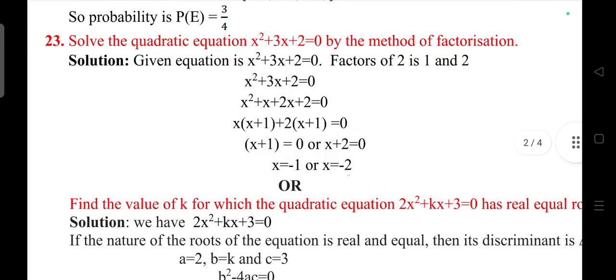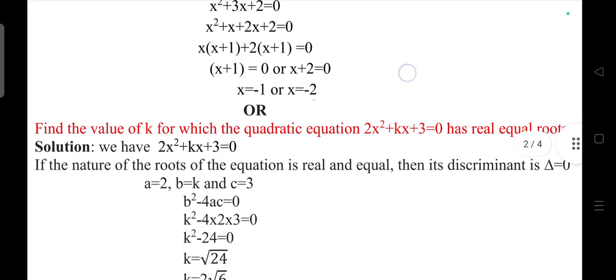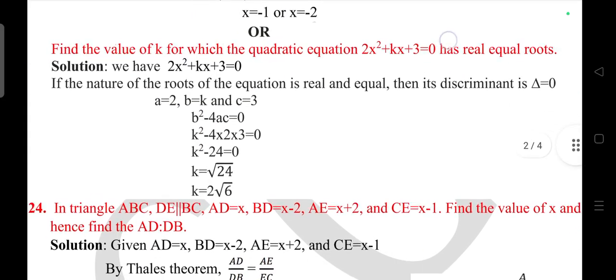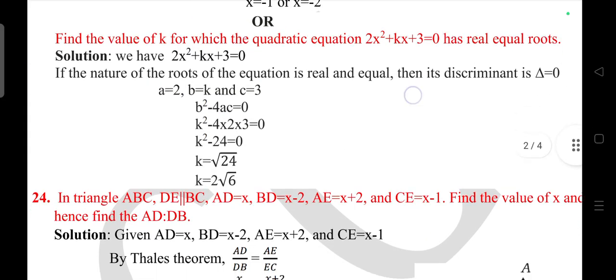If a coin is tossed twice, find the probability of getting at least one head. Here is the answer for question 22, answer is 3/4. Just take the screenshot and work out. I'm not explaining here because video will become more longer.